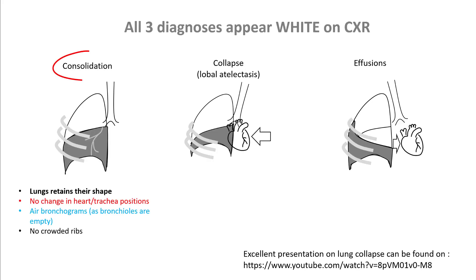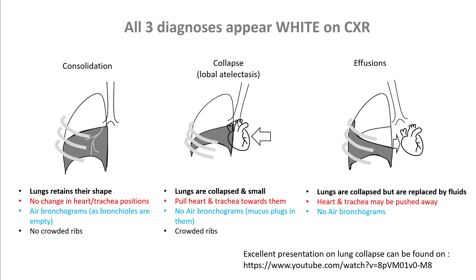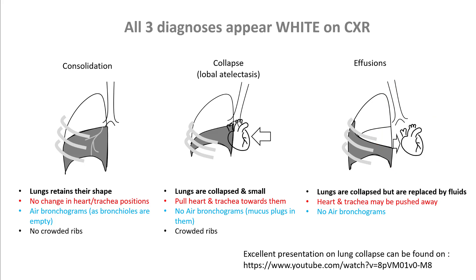So how do they look on chest x-ray? In consolidation, the lungs retain their shape — you see white infiltrates with no change in heart or tracheal position, and you may appreciate air bronchograms. In collapse, the lungs are small, they pull the heart and trachea towards them, there are no air bronchograms, and the ribcage is more crowded in that area. In effusions, the lungs are collapsed but replaced by fluid externally compressing them — the heart and trachea may even be pushed away, and there are no air bronchograms.